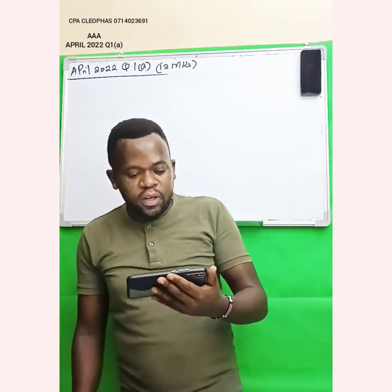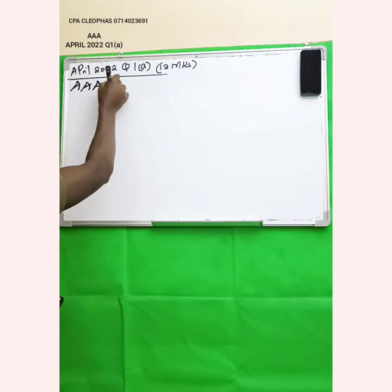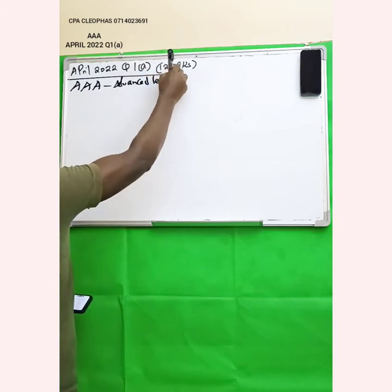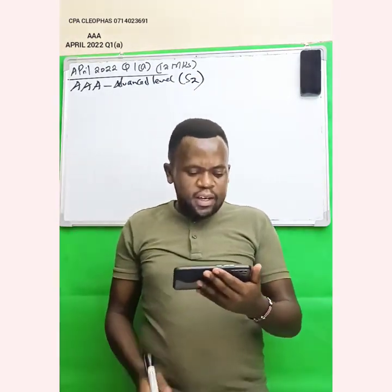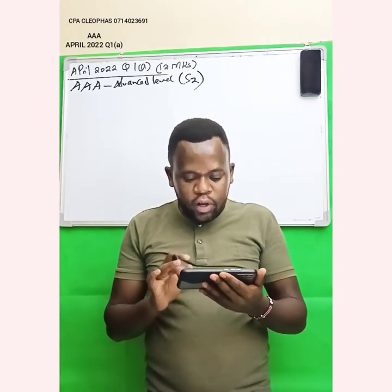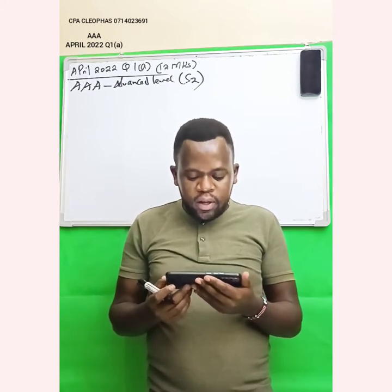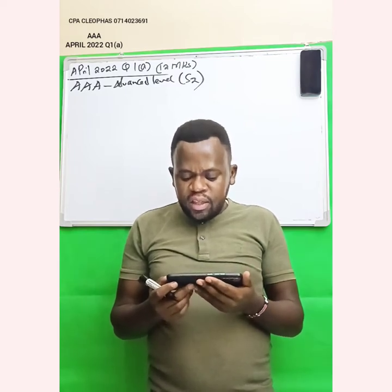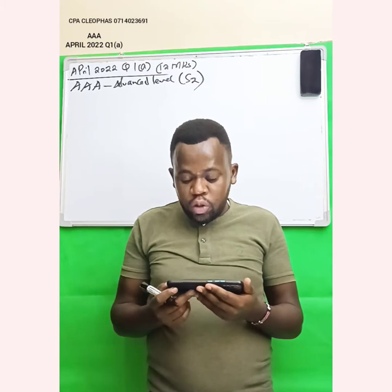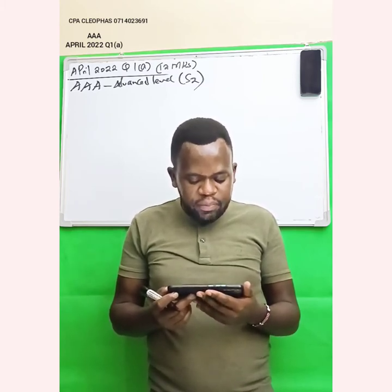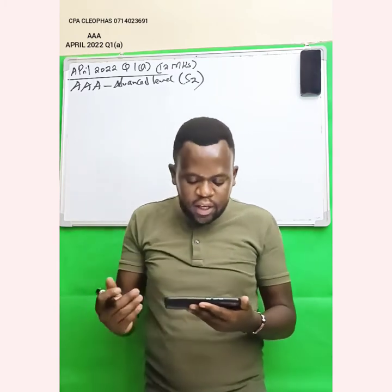Let's read question number 1A of April 2022, Advanced Auditing and Assurance — also known as Triple A. This is the advanced level of CPA, paper S2, specialization number 2, per the new syllabus. The question reads: 'The regulatory body for professional accountants in your country has approached you to draft professional standards of practice in conduct and reporting on attestation engagements. These are engagements in which a professional accountant reports on the reliability of information, usually of a financial nature, presented by one party to another, to assist the latter make inferences on the former.'